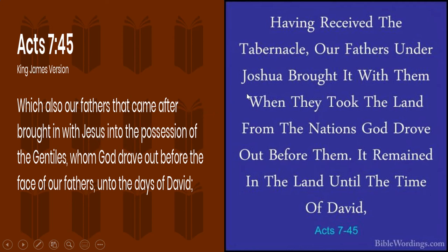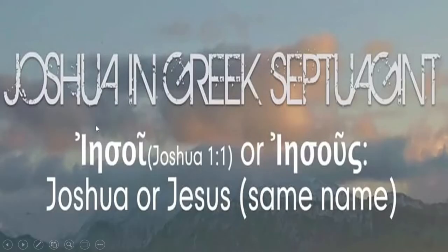For example, Acts 7 verse 45 reads: 'Which also our fathers that came after brought in with Jesus into the possession of the Gentiles, whom God drove out before the face of our fathers unto the days of David.' And it also reads: 'Having received the tabernacle, our fathers, under Joshua, brought it with them when they took the land.' So now you see with evidence that Jesus and Joshua are the same name in the Greek Septuagint — we are not making things up, this is based on facts.